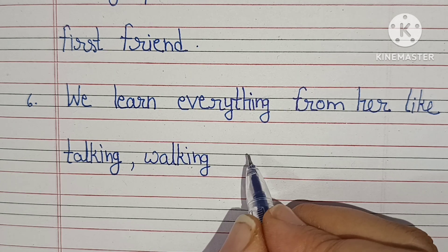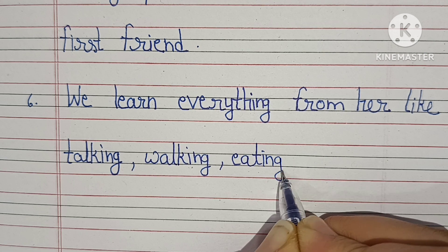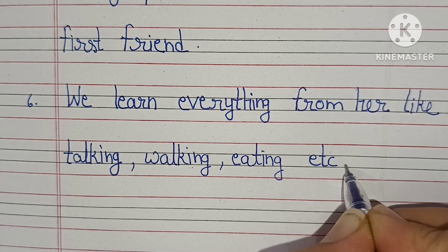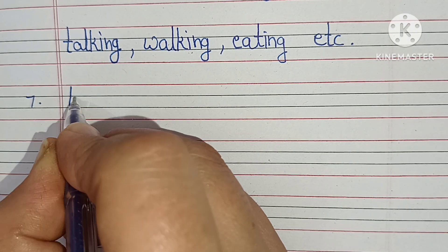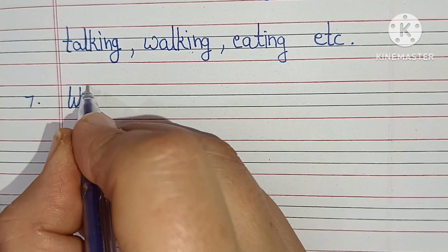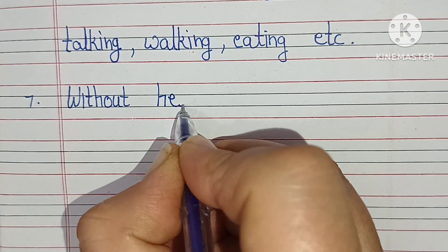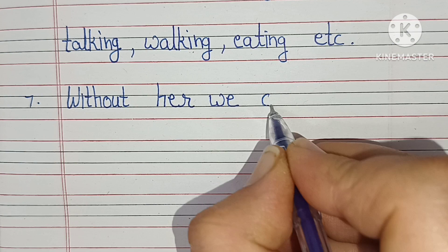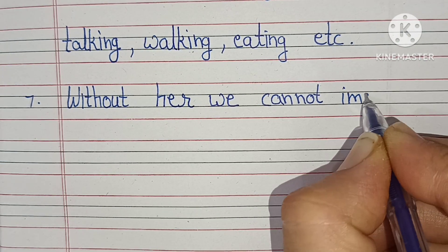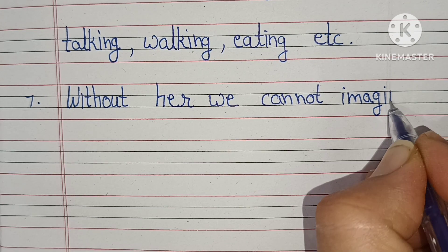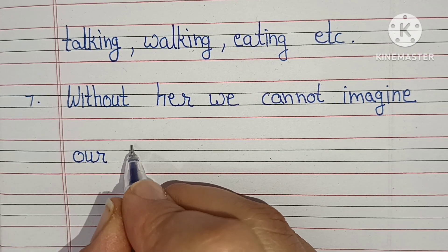Sixth line: we learn everything from her like talking, working, eating, etc. Seventh line: without her we cannot imagine our life.